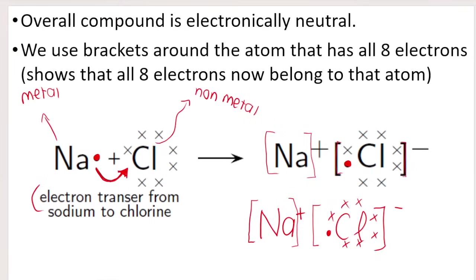I'm going to show you how we draw Lewis dot diagrams for ionic compounds or formula units — essentially an ionic salt. The compound is overall electrically neutral. We use brackets around the atoms to illustrate that all eight electrons now belong to that atom — full outer energy levels. Sodium is a metal, chlorine is a non-metal. Sodium has one valence electron because it's in group one. Chlorine is a halogen and has seven. Notice how we use different symbols for different atoms. You show with an arrow that there's going to be a transfer of electrons — that arrow basically says sodium is going to lose that electron and chlorine will gain that electron.